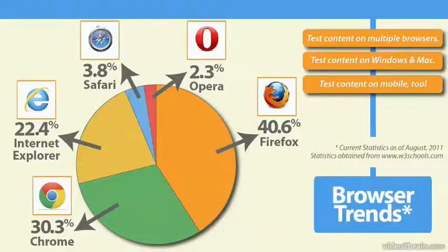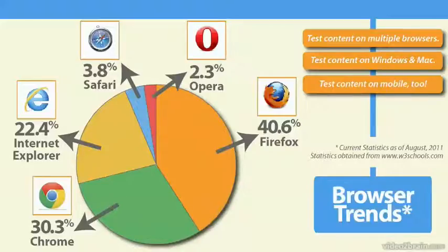Finally, testing your content on mobile is really a good idea. Device Central by Adobe is a great feature that lets you view your content exactly as it's going to look on a variety of different mobile devices — such as different types of phones, iPhones, Motorola, and more. So it's always a good idea to test on multiple browsers, multiple platforms, and mobile as well, keeping in mind what your content will look like in every one of them.